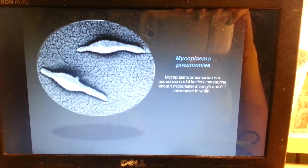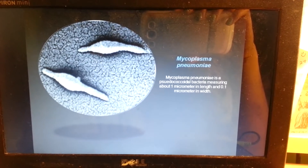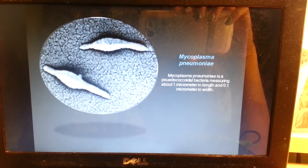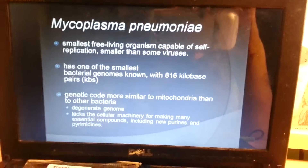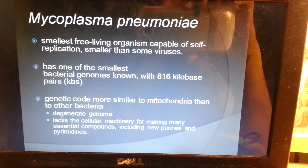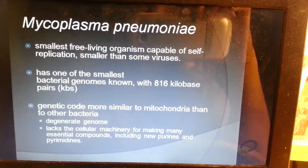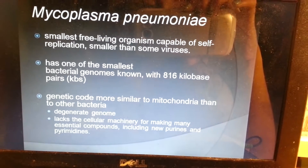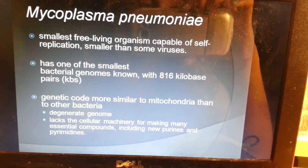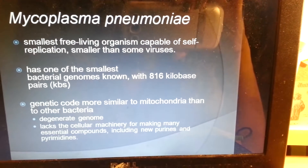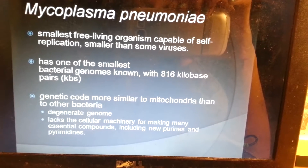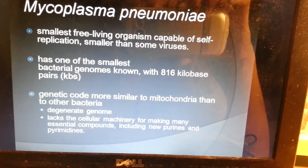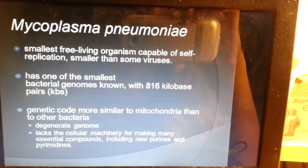Mycoplasma pneumoniae is a pseudo-coccoid bacteria measuring about 1 micrometer in length and 0.1 micrometer in width. There's the microscopic picture illustration of it. It is the smallest free-living organism capable of self-replication, smaller than some viruses. It has one of the smallest bacterial genomes known, with 816 kilobase pairs. Its genetic code is more similar to mitochondria than to other bacteria. It has a degenerate genome and lacks the cellular machinery for making many essential compounds, including purines and pyrimidines.